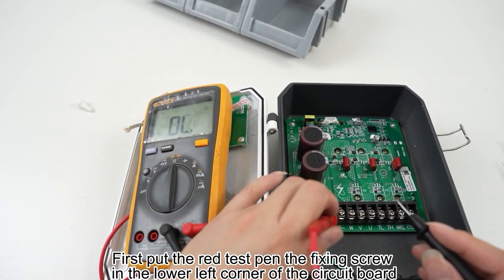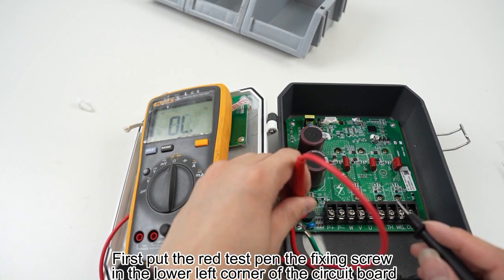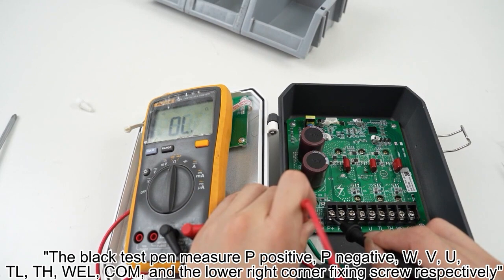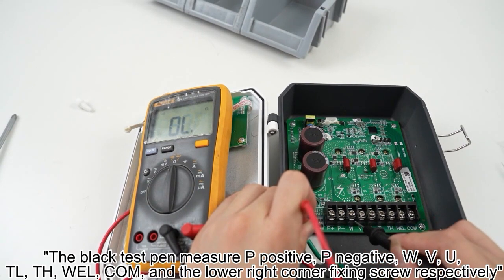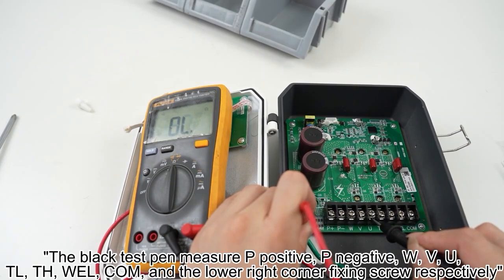First, put the red test pen on the fixing screw in the lower left corner of the circuit board. The black test pen measures P positive, P negative, W, UT, LTH, and the lower right corner fixing screw respectively.